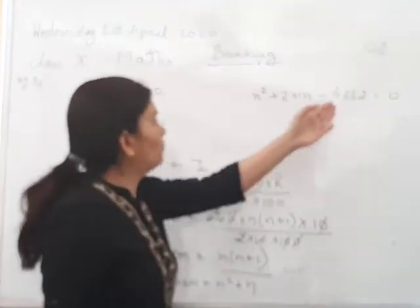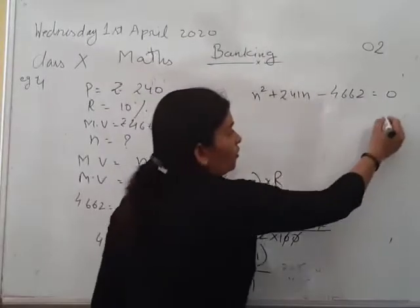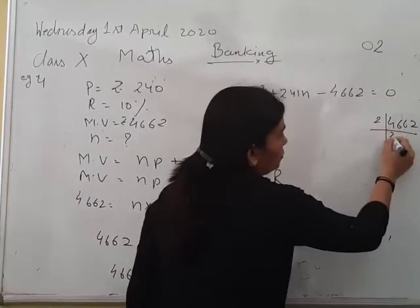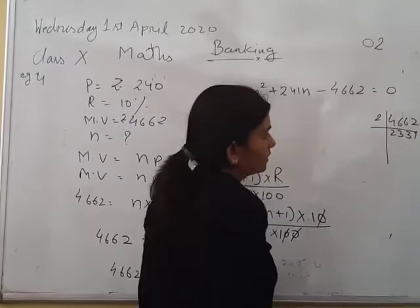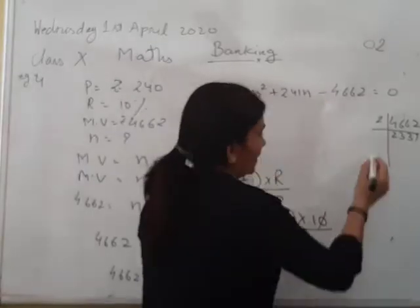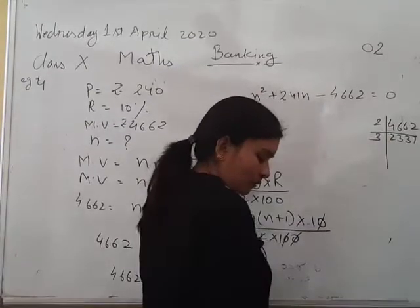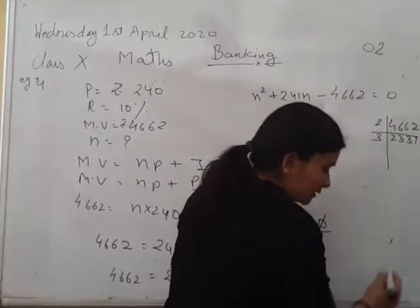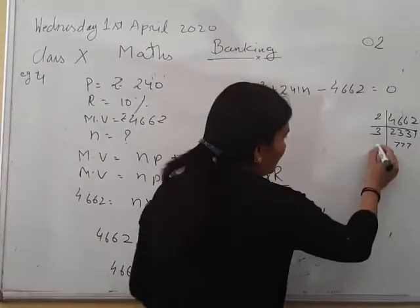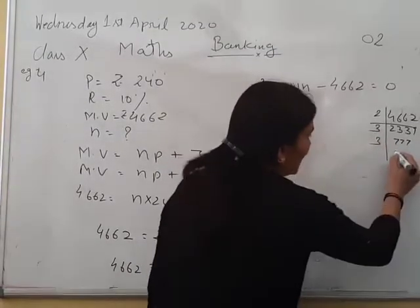We know how to solve it. We will make the factors of 4662. It is 2331, then again by which number we can solve this one, it is 3. It will be 777, then again we will solve it by 3, it is 259. Now it is a prime number, we cannot solve it.